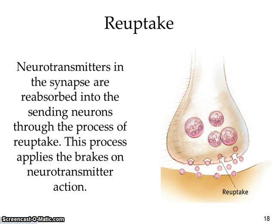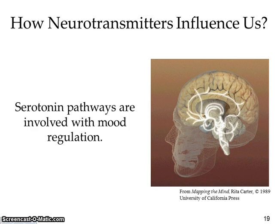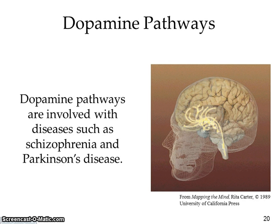You really need to know neurotransmitters — each one, what it does, and what happens if there's an excess or deficiency. Serotonin helps with mood regulation and is associated with mood disorders. Dopamine is associated with schizophrenia and Parkinson's disease: too much dopamine leads to schizophrenia, and not enough leads to Parkinson's disease.